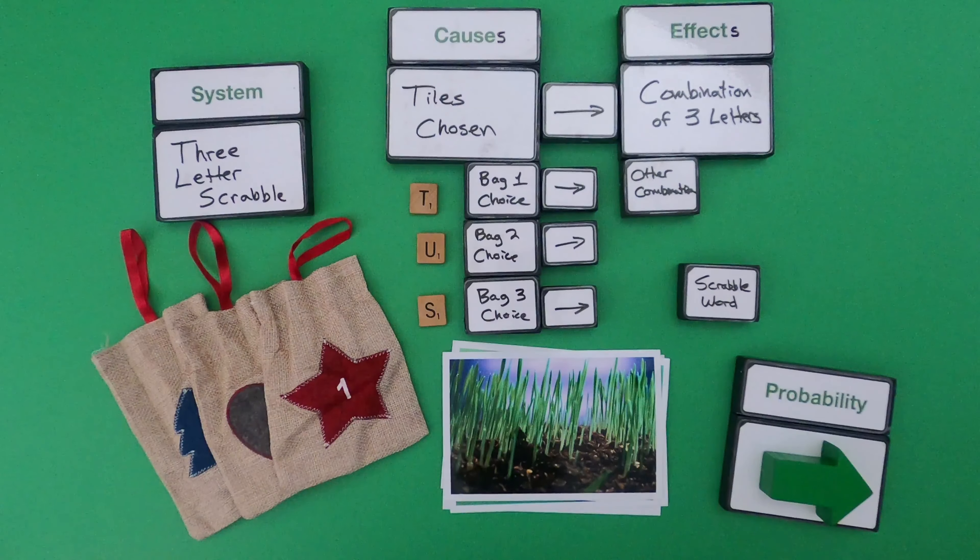Let's try this out. The letters I chose were T, U, and S. Does that make a Scrabble word, or another combination? That's just another combination — not something I could play in Scrabble. So how do I figure out all the possible combinations? The easiest way is using a three-letter probability table. For each choice: choice one is R, S, T, L, and N; then we've got the vowels for choice two; then R, S, T, L, and N again for choice three.